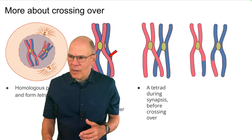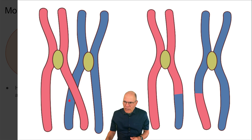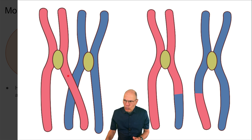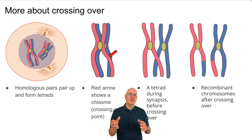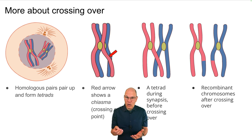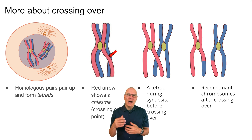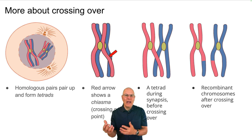What is the crossing over all about? This region of the blue chromosome will be attached to the rest of the red chromosome, and this region of the red chromosome will be attached to the blue chromosome. So by the time we're done, we no longer have chromosomes that come purely from your mom or your dad — we have recombinant chromosomes that are a mixture of DNA inherited from both your mother and your father.